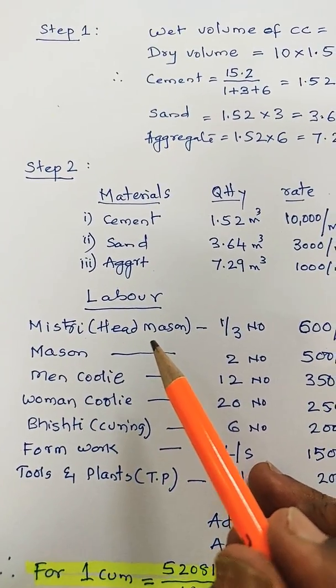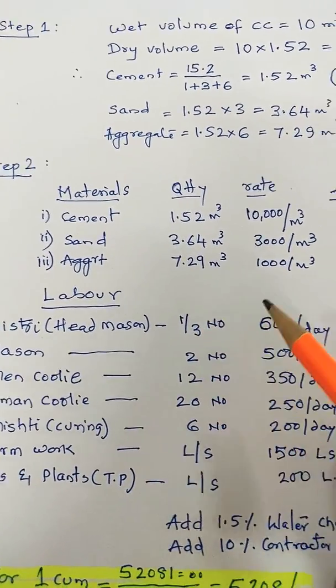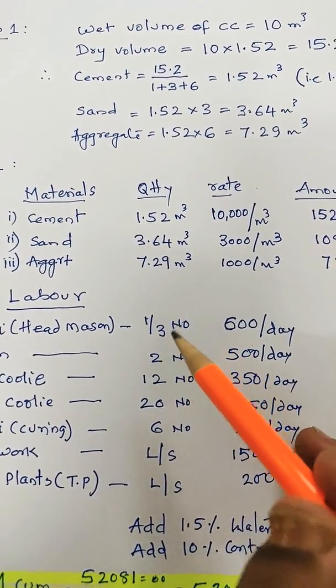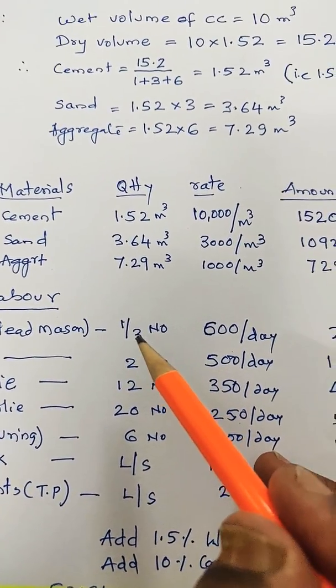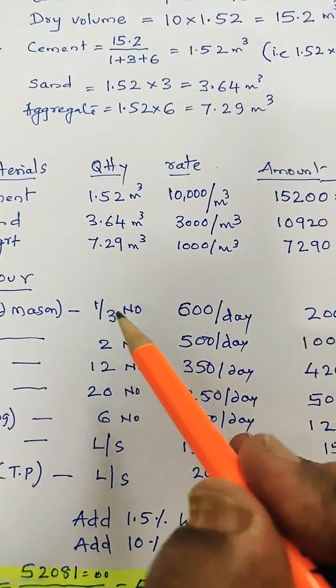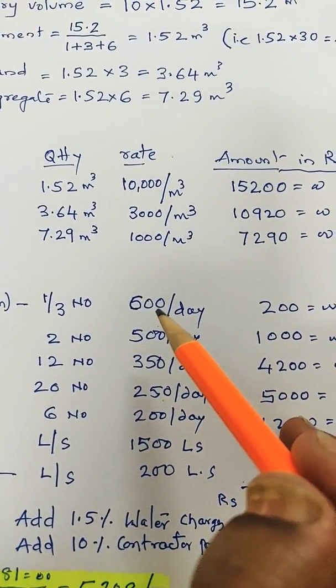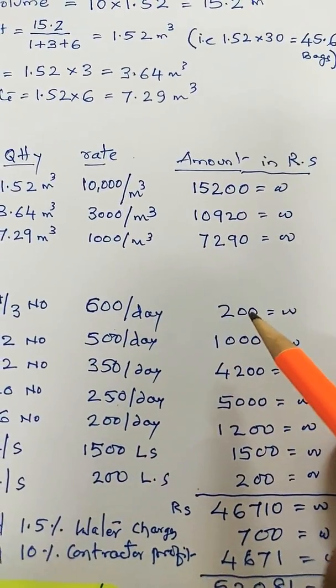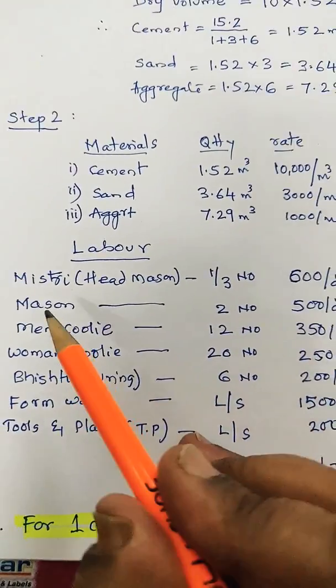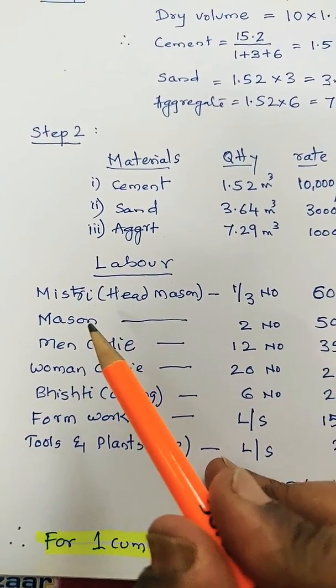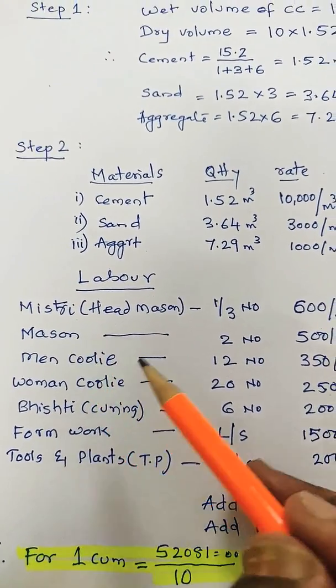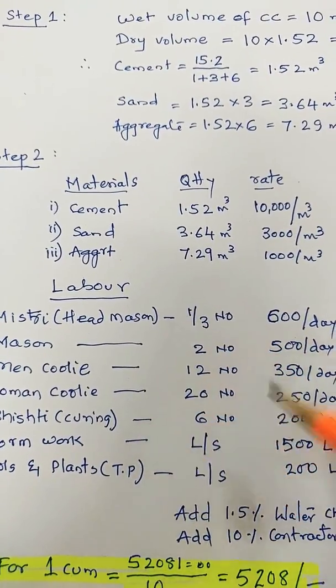Maestri or head mazon, he is like a supervisor. He will be having two or three sites, so consider he is there for one-third of the day. Per day is 600 rupees for him and it comes out to 200 rupees.